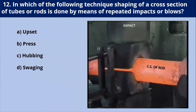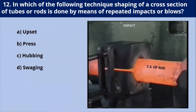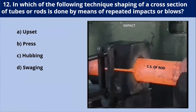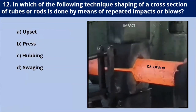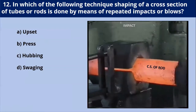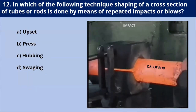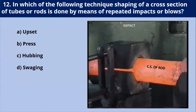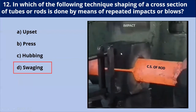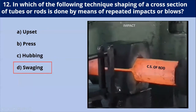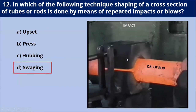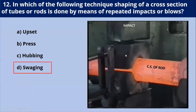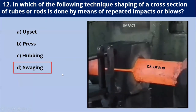In which of the following techniques is shaping of the cross section of a tube or rod done by means of repeated impact or blow? Swaging is a mechanical deformation technique of reducing or shaping the cross section of a rod or tube by means of repeated impact or blow. That's why our answer is swaging. As shown, there are two concave dies, and between them we hold the circular cross section of the rod and give the impact over the dies — this is called a swaging operation.